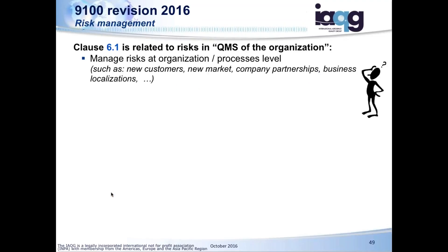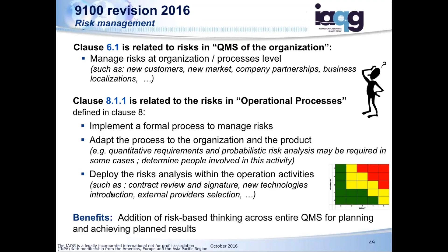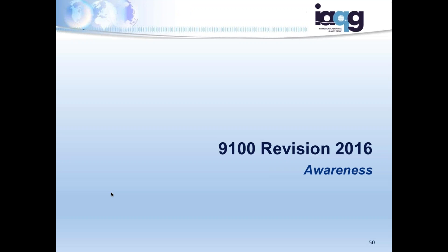Risk management: in Clause 6.1 in the planning section we talk about risk at the quality management system level. We still have risk management in Clause 8.1.1 — the requirements really haven't changed since they were introduced in 2009, where you have a process to manage risk, identify who's responsible, what the criteria are, how you're going to mitigate it. The benefit is we now have both the operational product risk and the expanded view of risk across the whole quality management system.